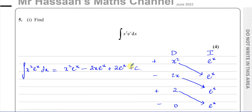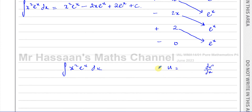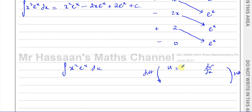Now for those students who prefer the traditional method, I'll do it both ways. In this case you're going to call one function u and the other one dv/dx. The one you call u is going to be differentiated, and the one you call dv/dx has to be integrated. The one you differentiate, if possible, is the one that breaks down.